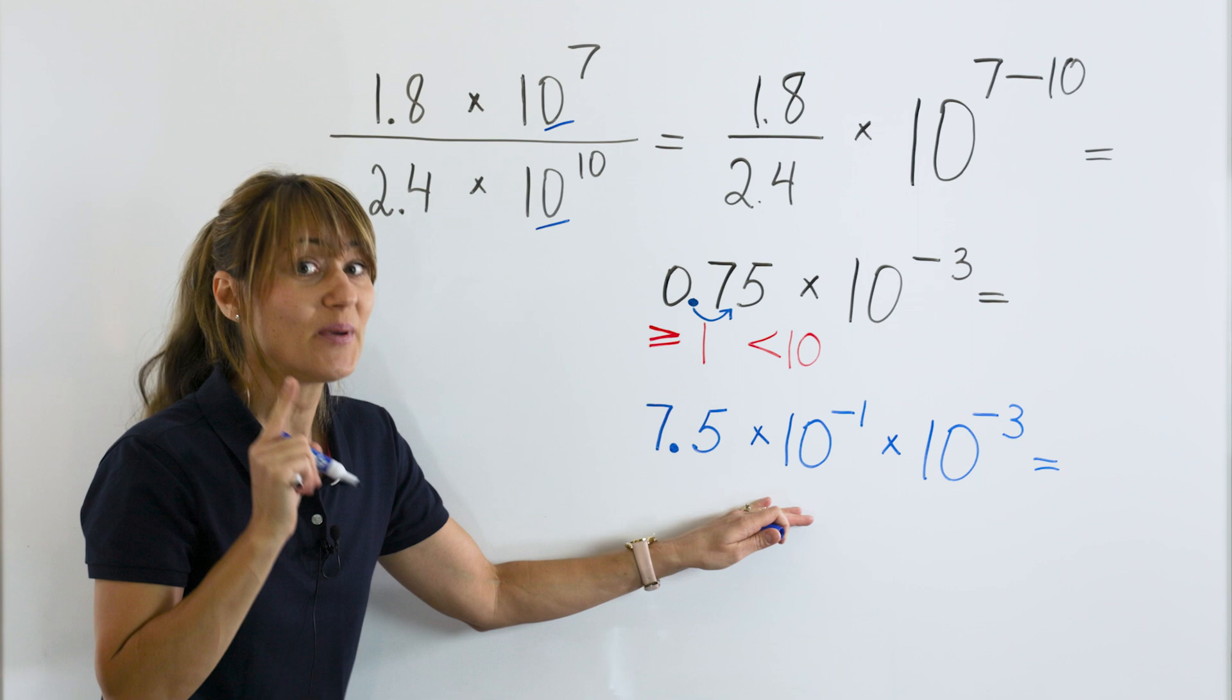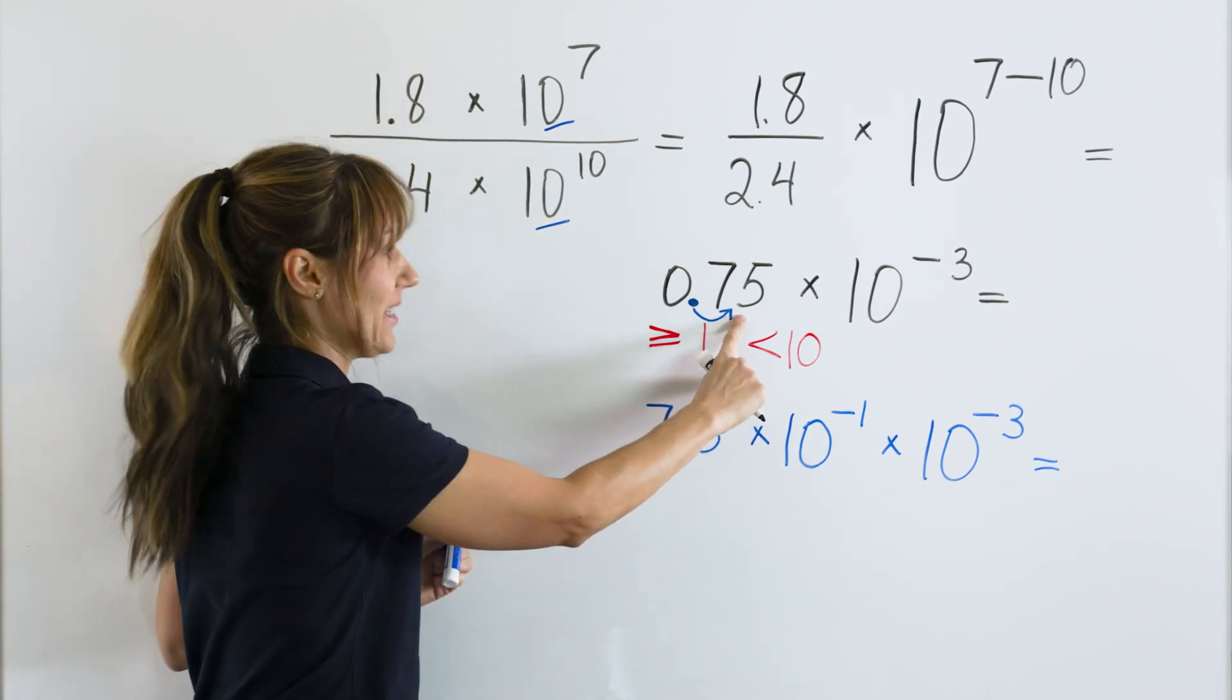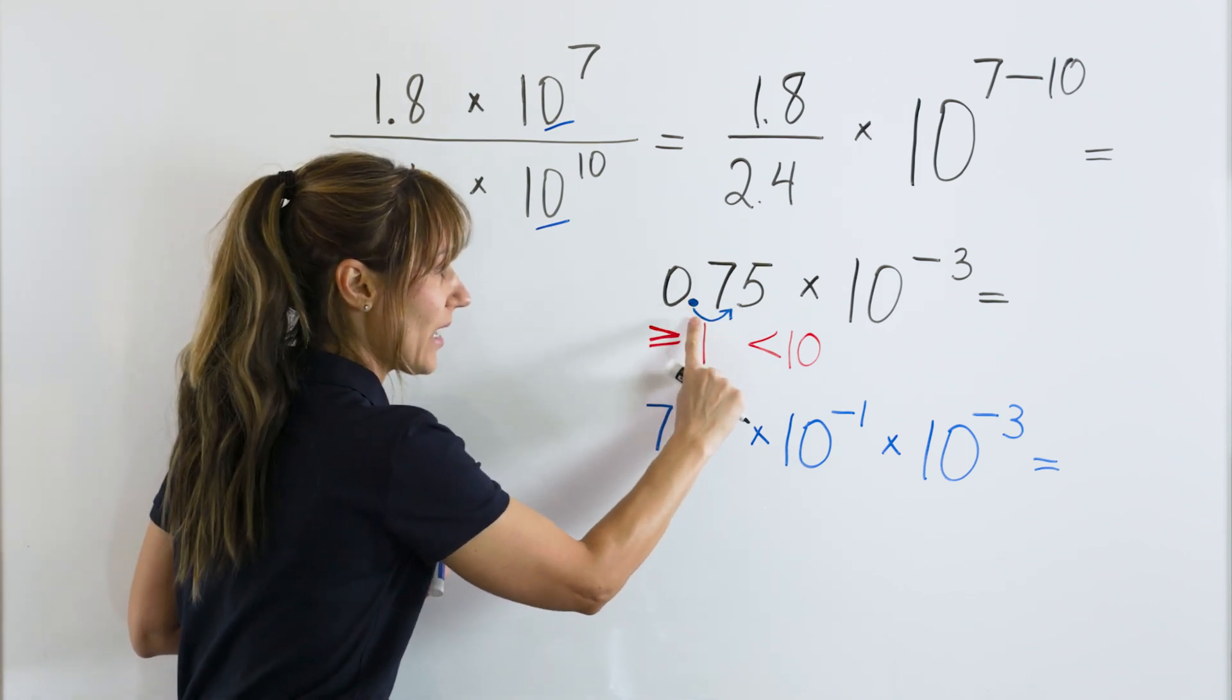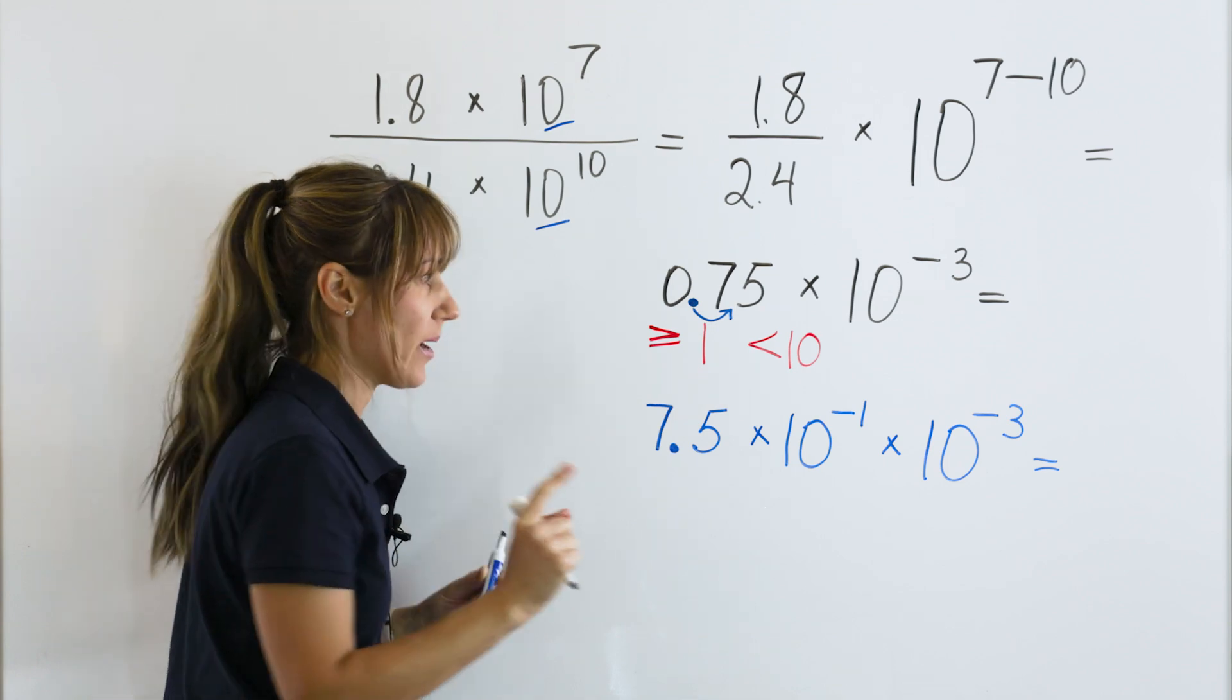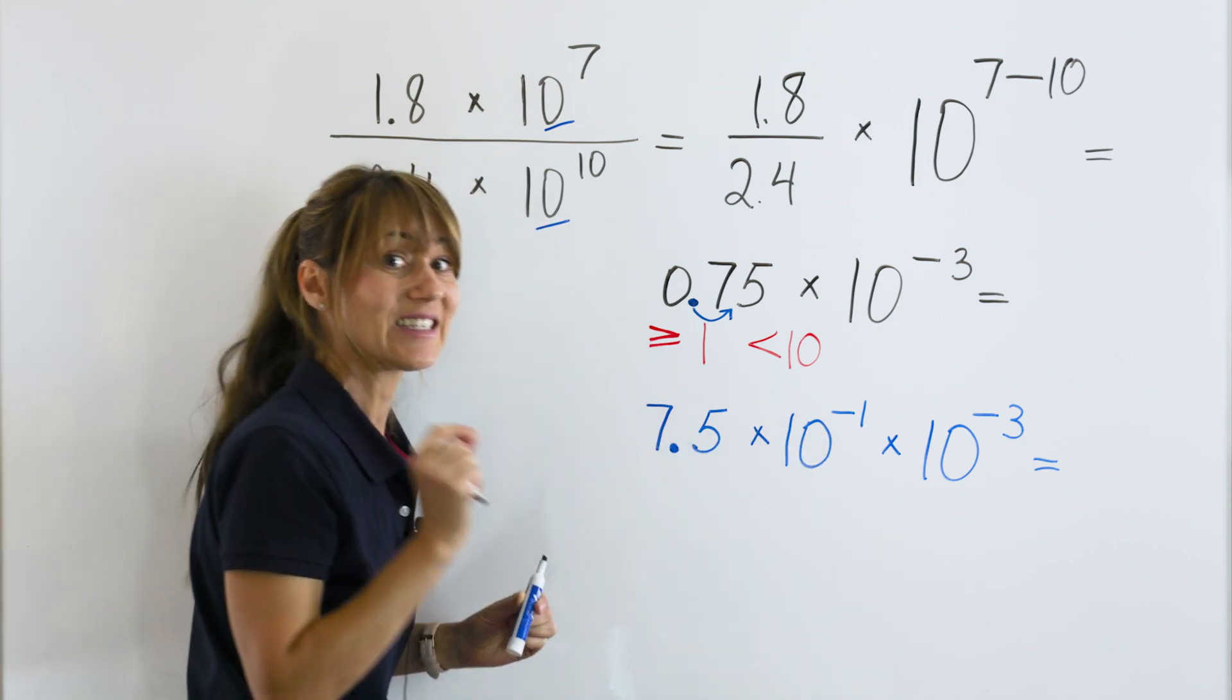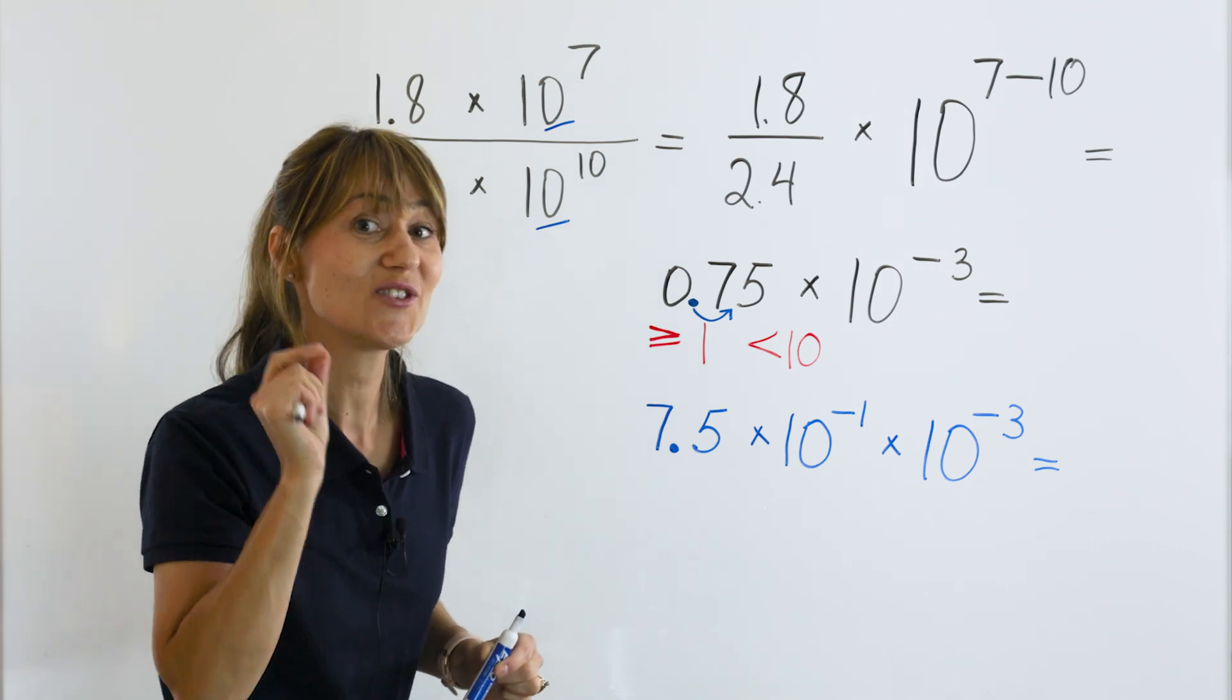This step can be confusing, so let's look at it again. We had a small number, 0.75. We took the decimal point and moved one place to the right. Because we had a small number and we moved one place to the right, then the exponent on 10 is negative 1. Then we brought down what we had, and now we are ready to simplify.